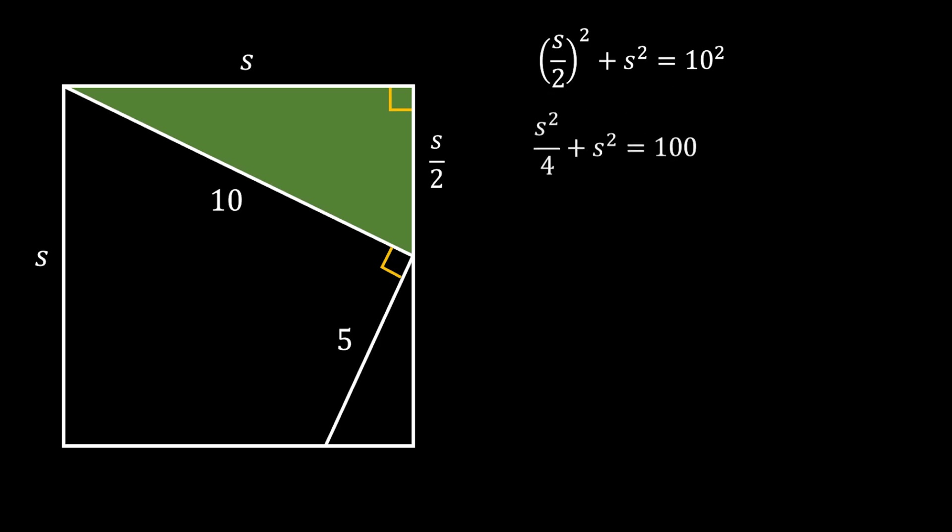Then we will put everything to the square and we can lose the fraction by multiplying both sides with 4. Then we will get the following and finally we will get that 5S squared is equal to 400 which means that S squared is equal to 80.